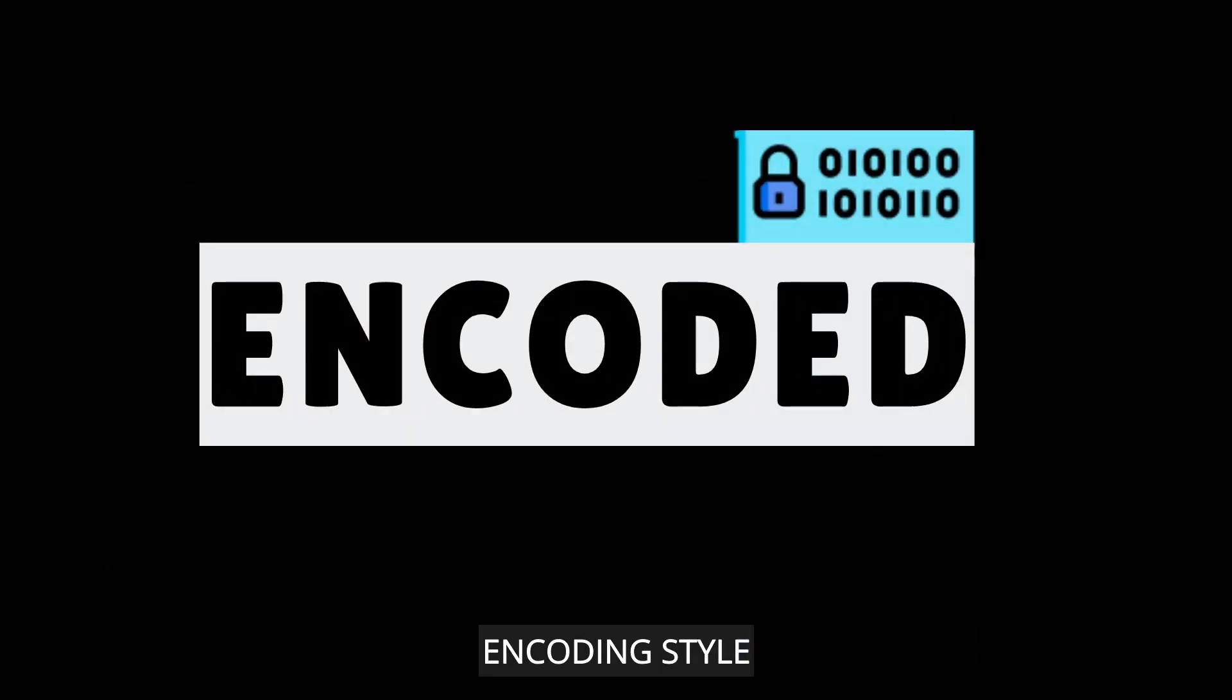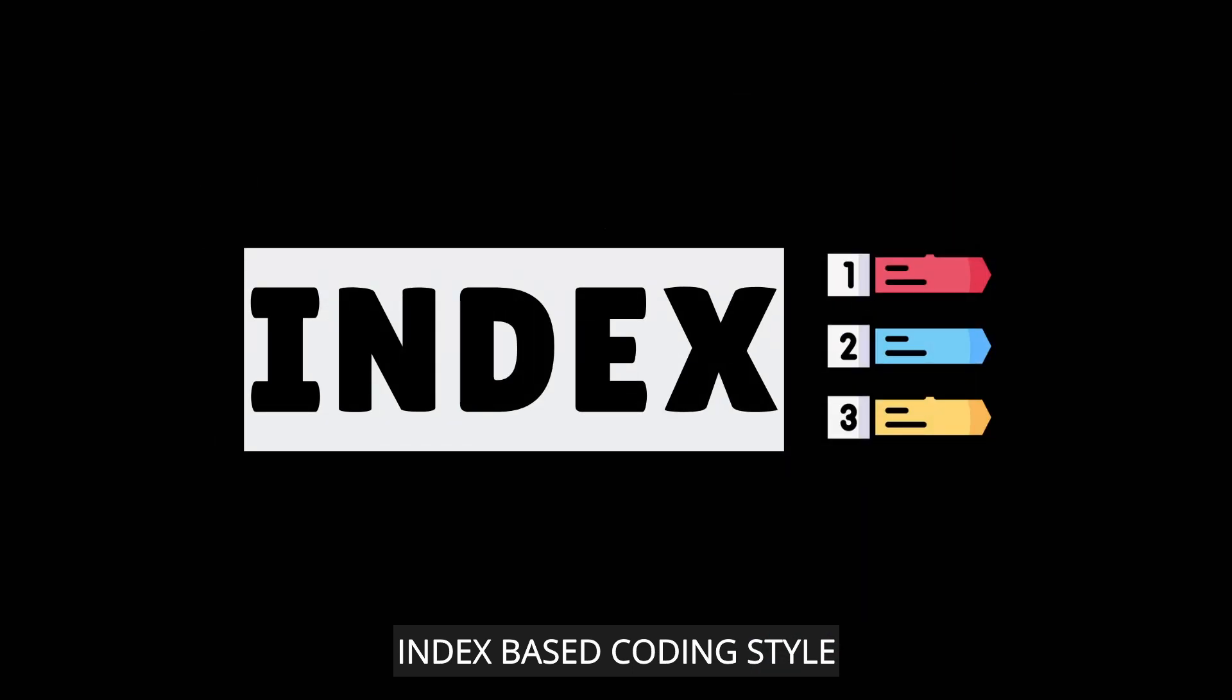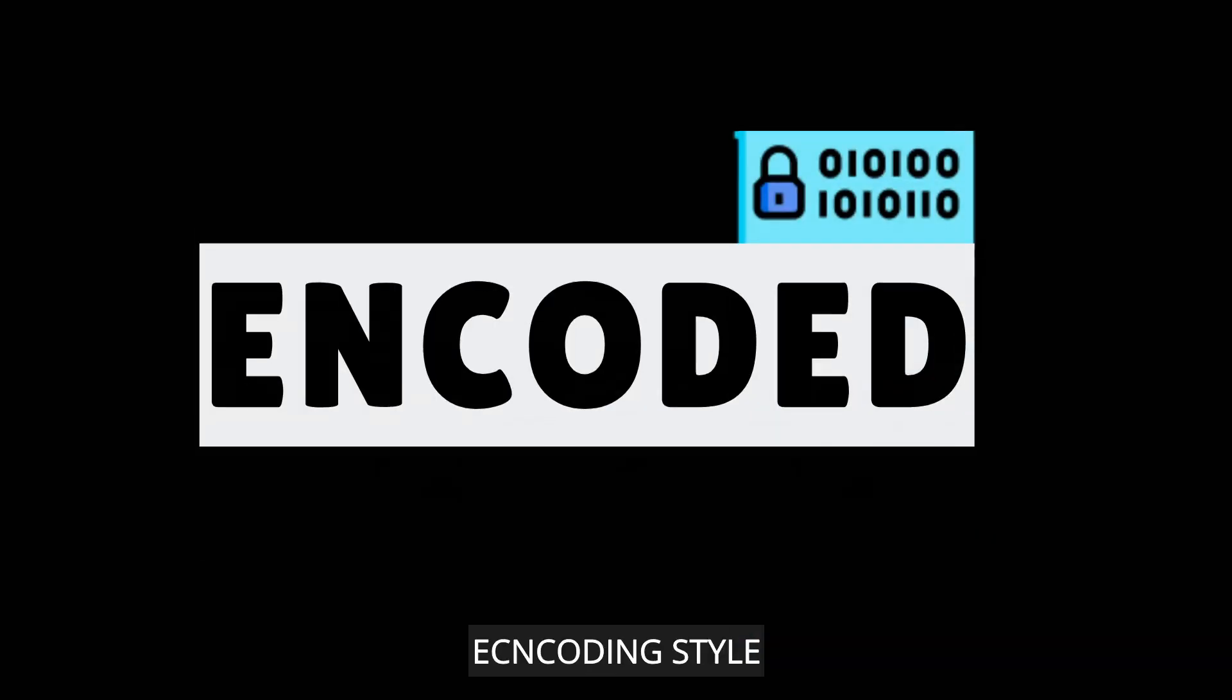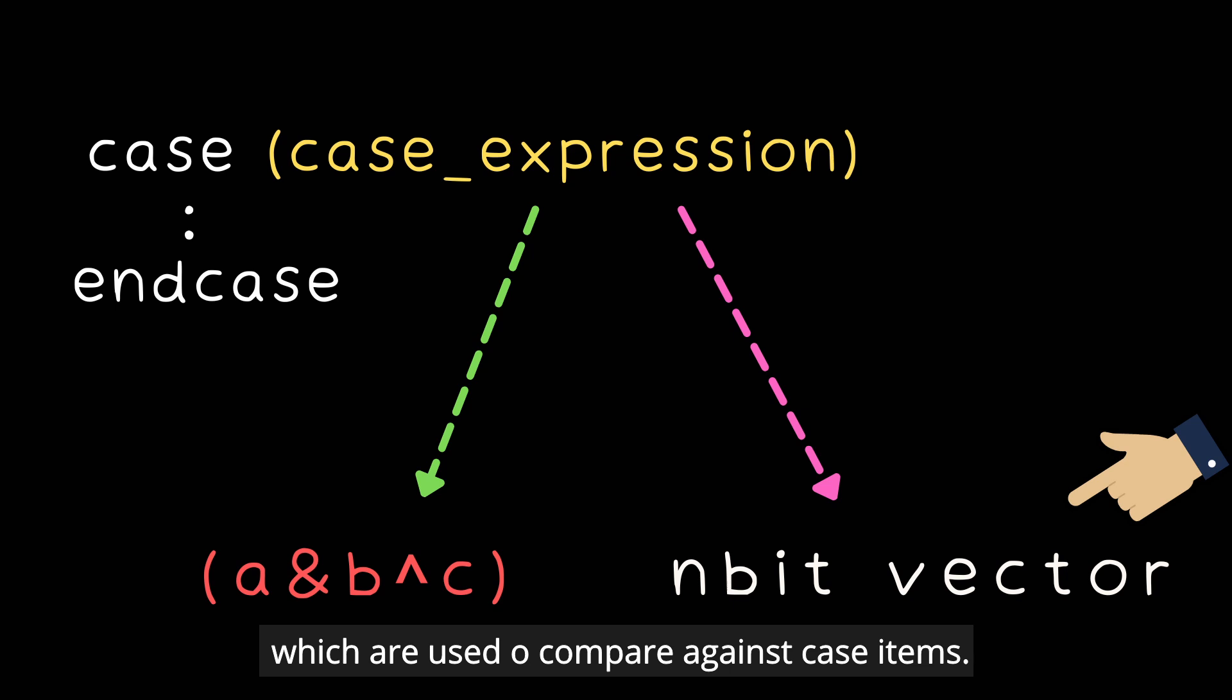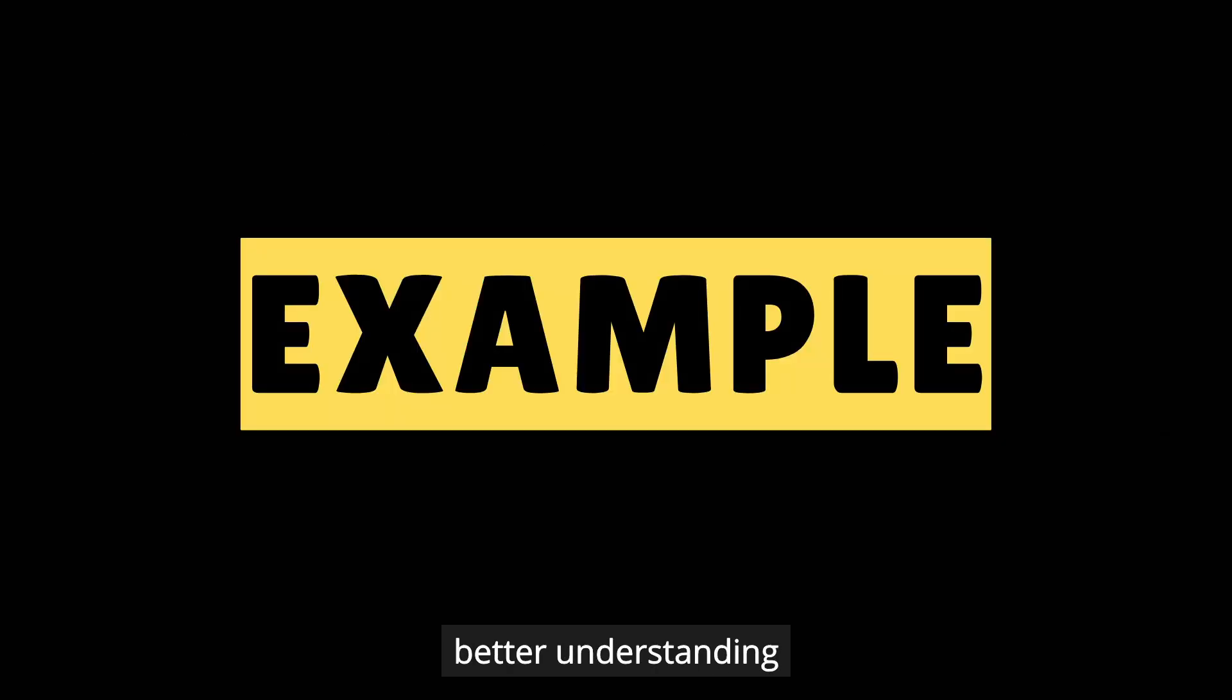One is encoding style and other is index based coding style. Let's first discuss encoding style. In encoding style, case expression can be an expression that evaluates to a constant or it can be a bit vector which are used to compare against the case items. Let's take an example for better understanding.